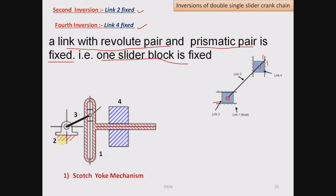Let us suppose that link number 2 is fixed — we have fixed this slider, link number 2. Link number 3 will act as crank, so it will rotate. Link number 3 is connected to link number 4, which is again the slider. So 3 is connected to 4 which is the slider, and 4 is connected to 1 using a prismatic pair.